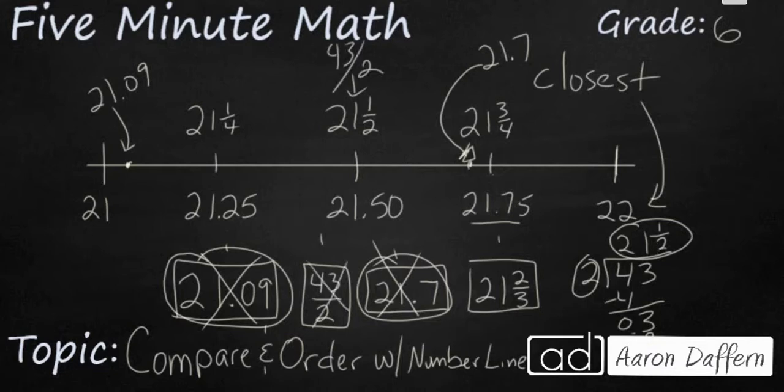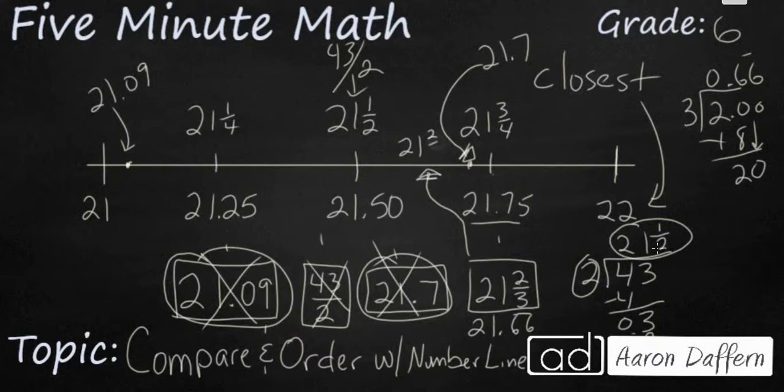So now all I need to worry about is my 21 and two-thirds. Well, 21 and two-thirds, if you don't know where that is, let's just take this two-thirds and make that into a decimal. You should know what that decimal is. If not, you can divide the 3 into 2. And it's going to go in 6 times. And it's actually going to be 6 repeating because it's going to keep getting 2 all the way down. So really this is going to be 21.66 going on forever. We'll put a little line up there. So that's going to go right around here somewhere, 21 and two-thirds or 21 and 6 repeating.